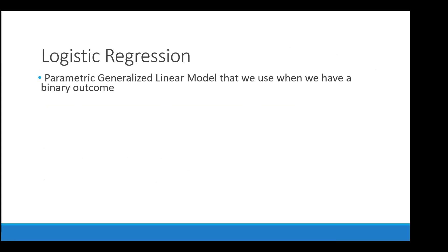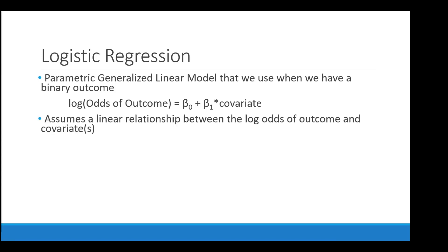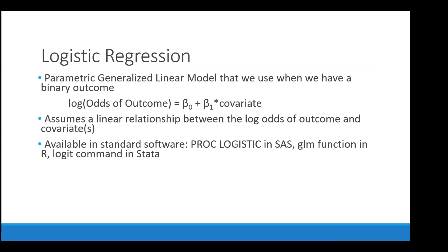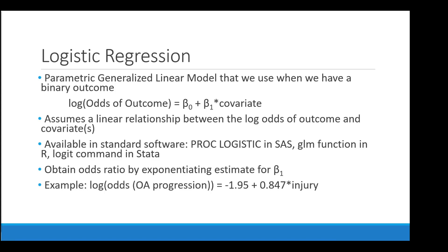Logistic regression is a parametric generalized linear model used when we have a binary outcome. We model the log of the odds of having the outcome as a function of our predictors, assuming a linear relationship between the log odds and the covariates. It's available in standard software: PROC LOGISTIC in SAS, the GLM function in R, the logistic command in Stata. We obtain an odds ratio by exponentiating the estimate for beta_1. In our OA progression example, the log odds of progression equals negative 1.95 plus 0.847 times prior knee injury, yielding an odds ratio of 2.33.